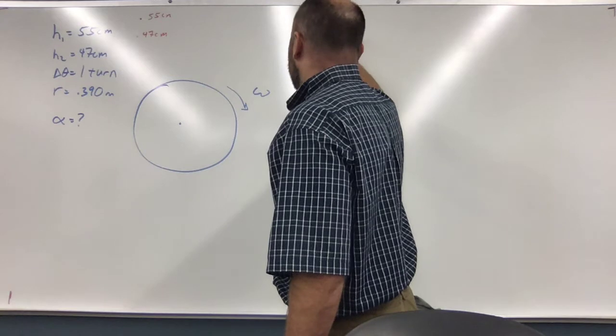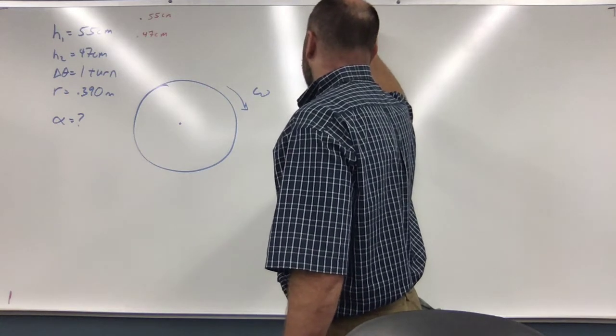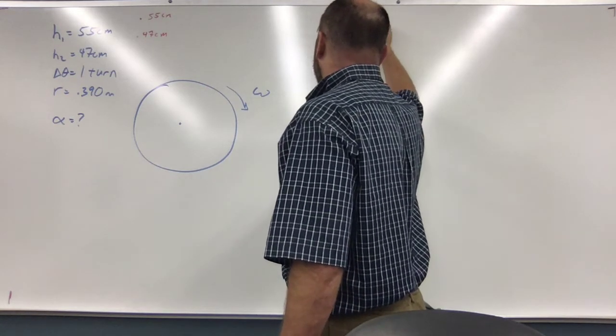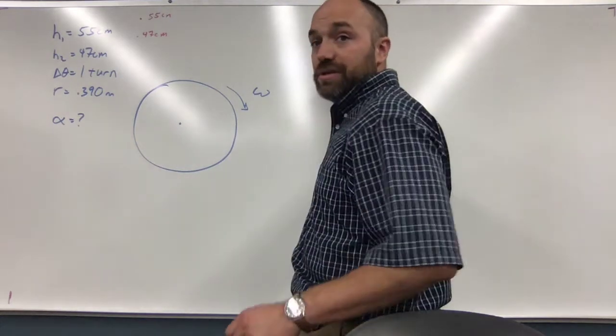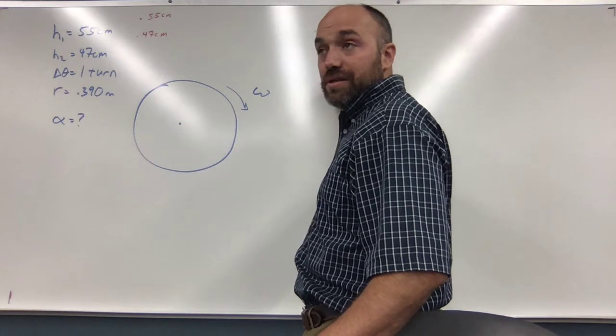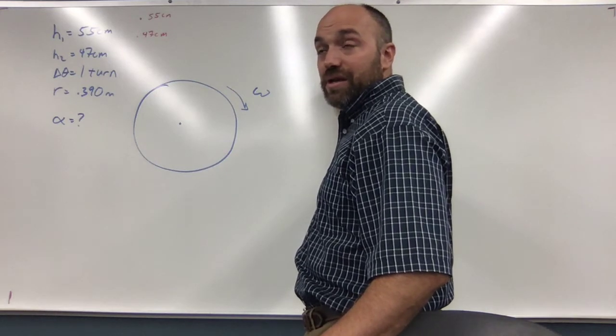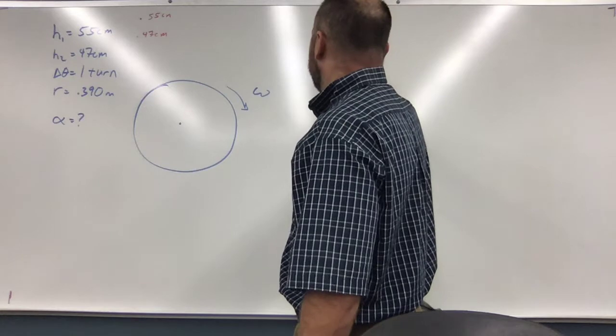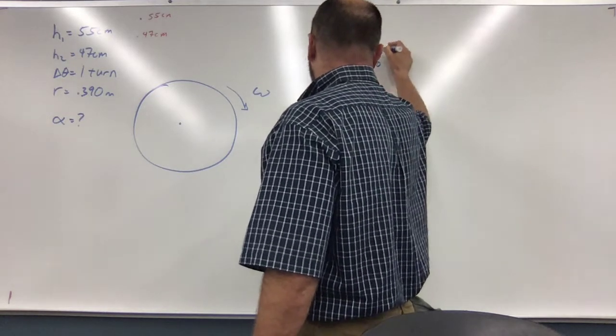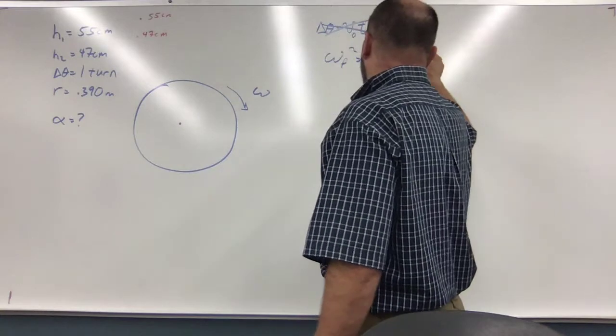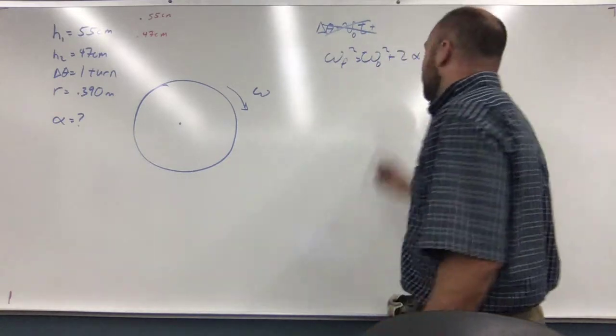Probably number three, delta theta equals V naught times T. No, that's not gonna work. Let's try a different one. We don't know T. The last one, number four: omega F squared equals omega naught squared plus two alpha delta theta. That's the one we want.